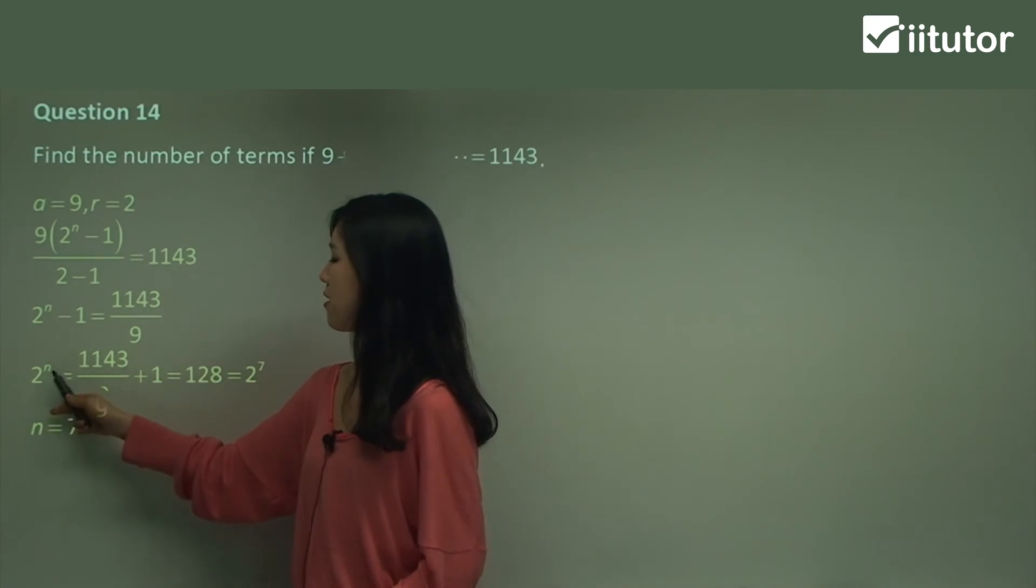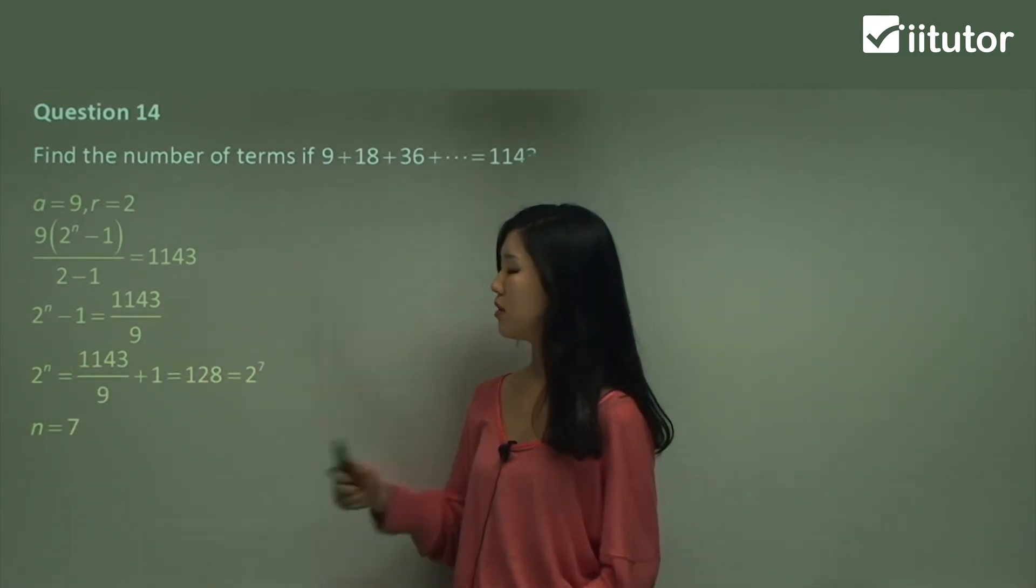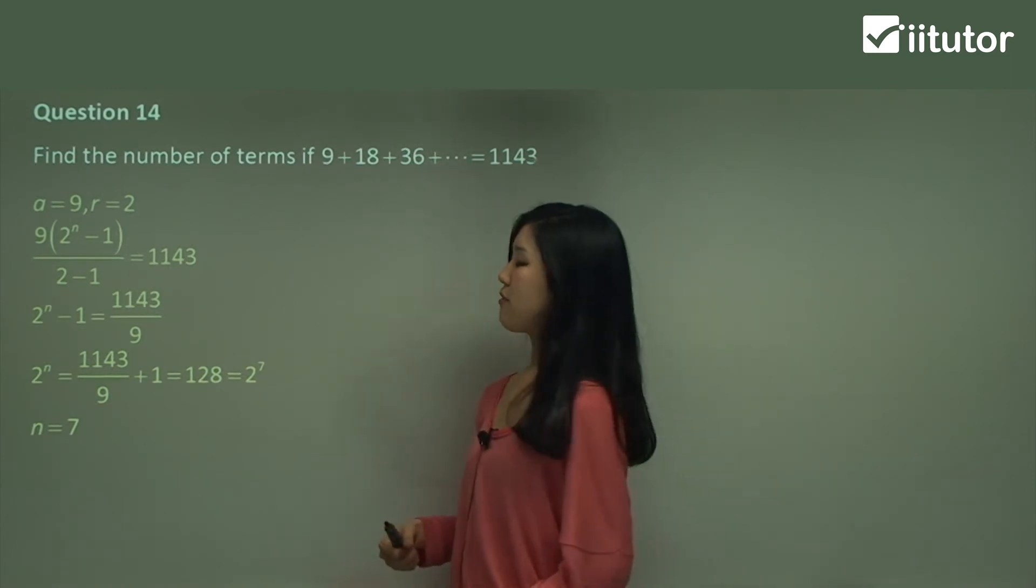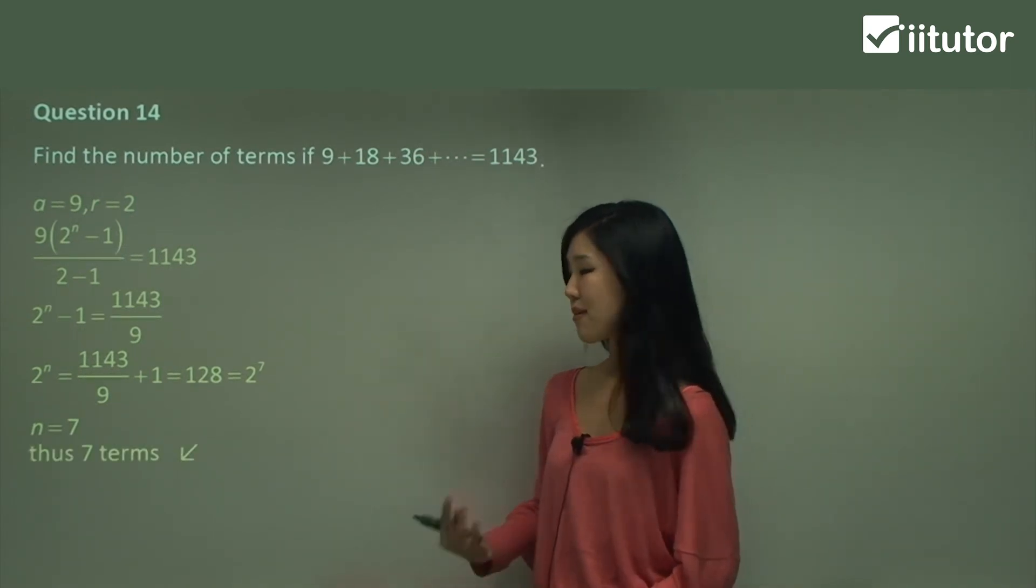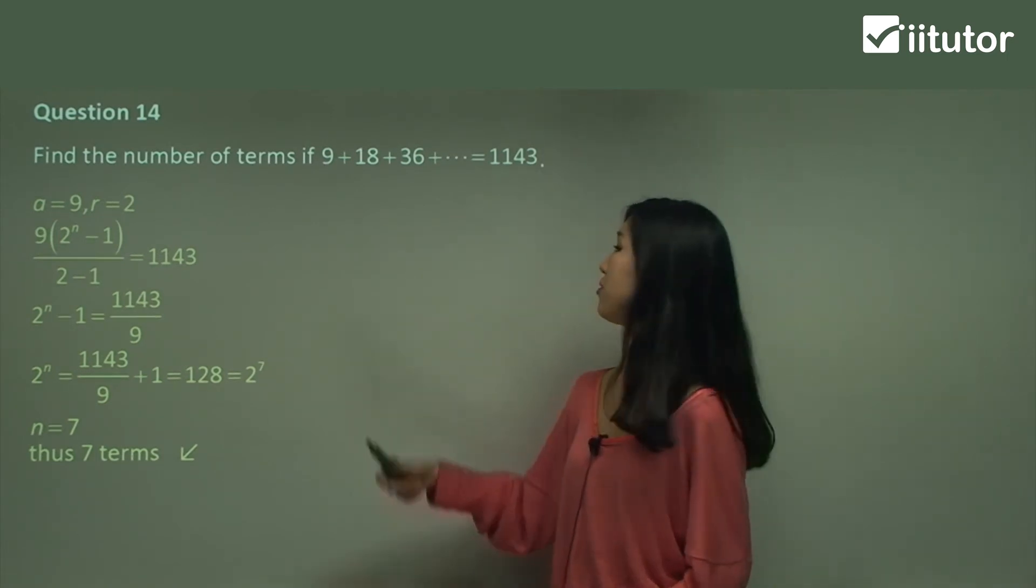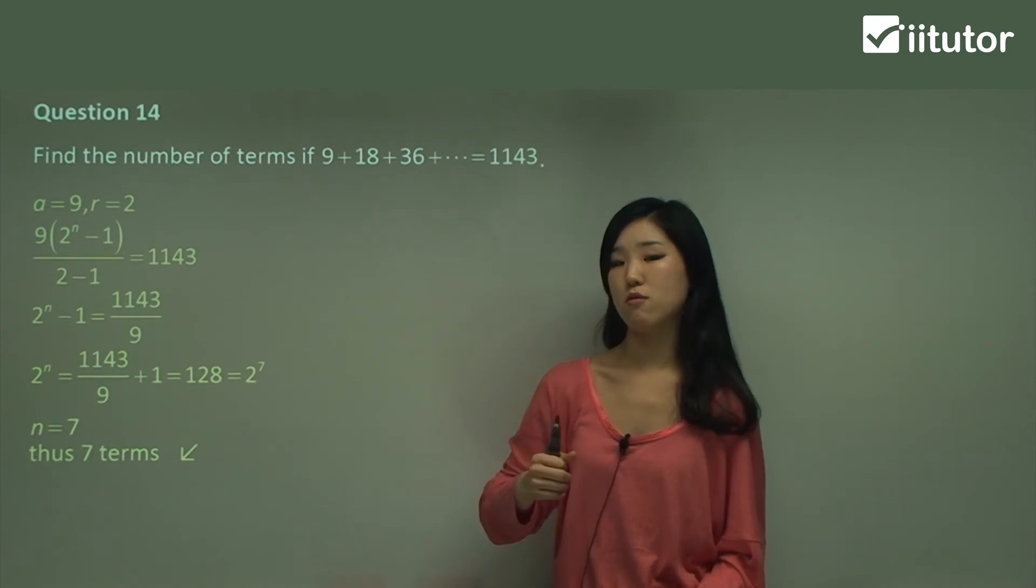See how they're both 2. So therefore, n must be equal to 7. The indices must be equal. So n equals 7. So therefore, there are seven terms. Basically that's the answer. There are seven terms. There are seven terms in this series that make a sum of 1143.